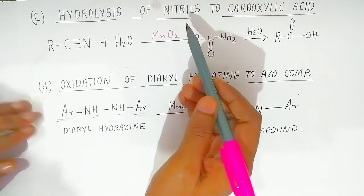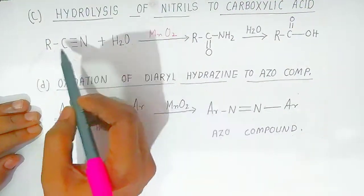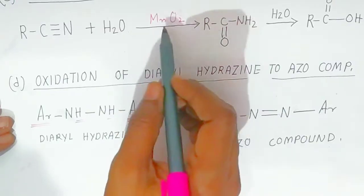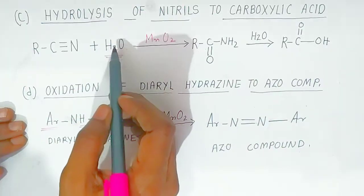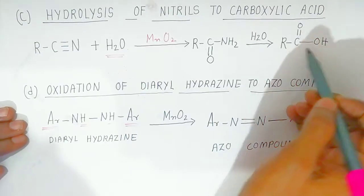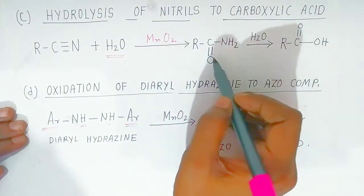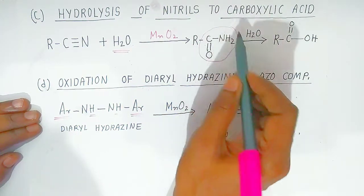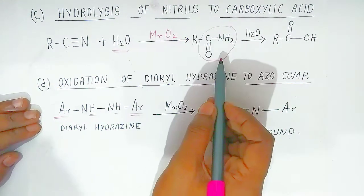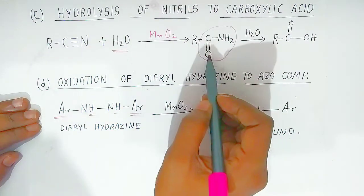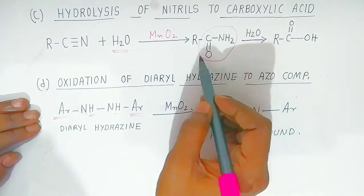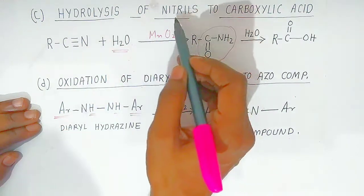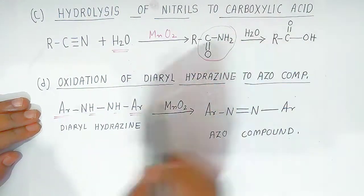Hydrolysis of nitriles to carboxylic acid. Here we have alkyl cyanide. In presence of manganese dioxide as oxidizing agent, hydrolysis takes place — OH converts it to form carboxylic acid. It also forms acetamide, which contains the amino group CO-NH2, called an amide compound. So this is a very important reaction to convert nitriles to carboxylic acid as well as amide.